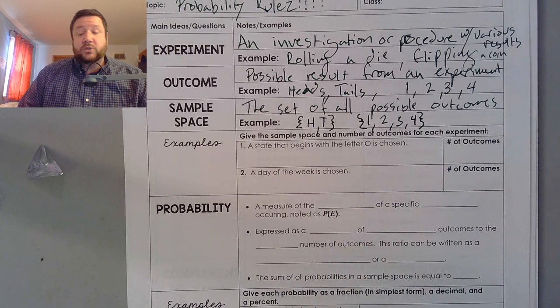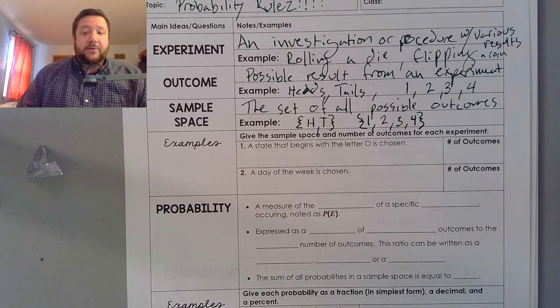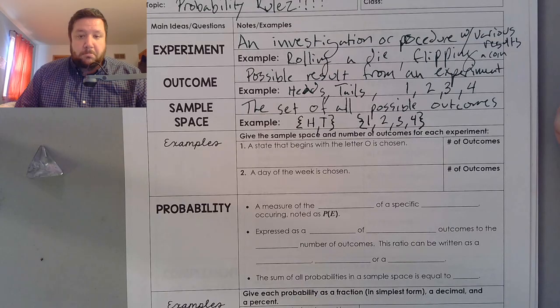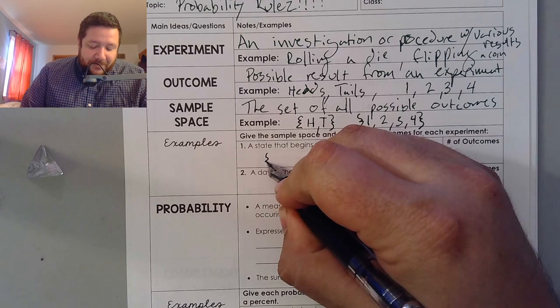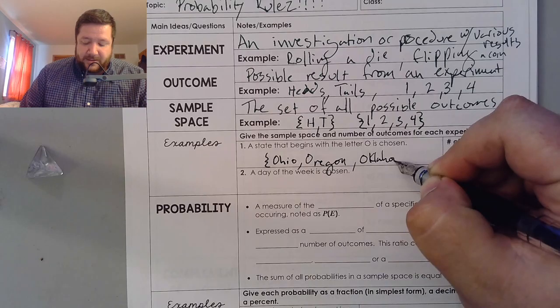So, let's look at a couple examples. State begins with the letter O is chosen. So, if I think about the sample space for states beginning with O, can you do it? All right, it's Ohio, Oregon, and Oklahoma.